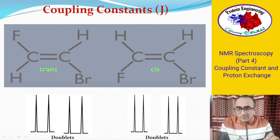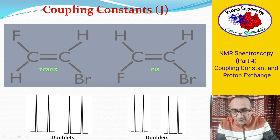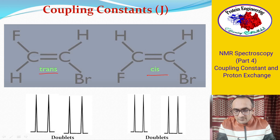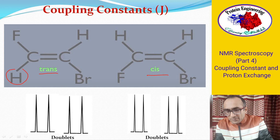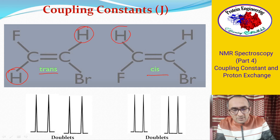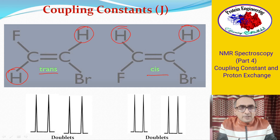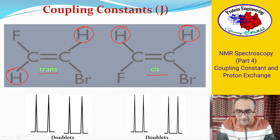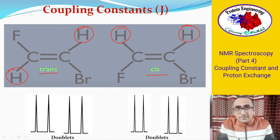Let's look at a compound here in trans and cis configuration. In trans configuration the protons are on opposite sides; in cis configuration they are on the same side. If you look at the NMR spectra, both protons will give a single peak and each peak would be split into a doublet.